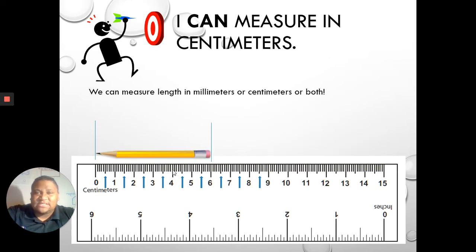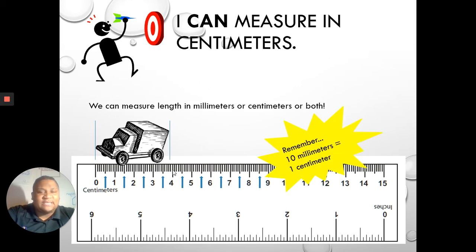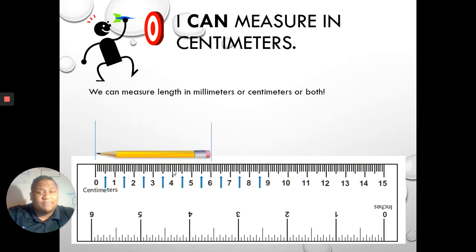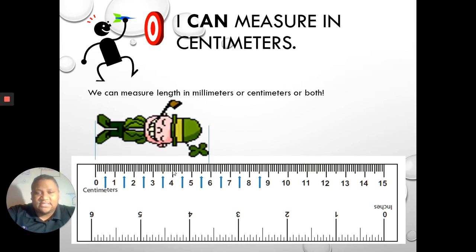Let's try another one. Let's look at this pencil. It started at the zero and it went all the way to the six. So what could be the sentence? Last time I said that the truck was four centimeters long. Now I want you to tell me the pencil is... If you said the pencil is six centimeters long, you are correct.